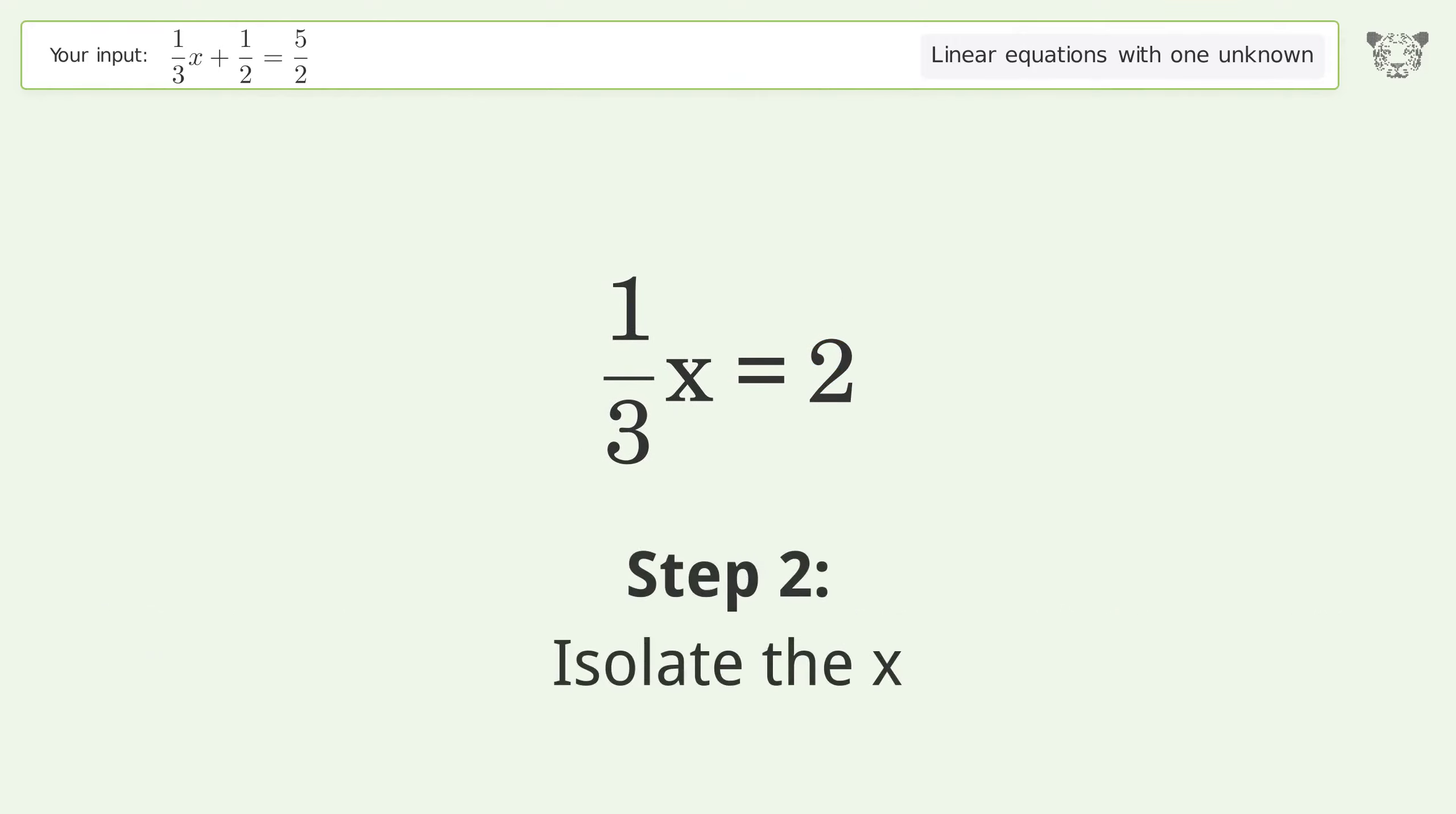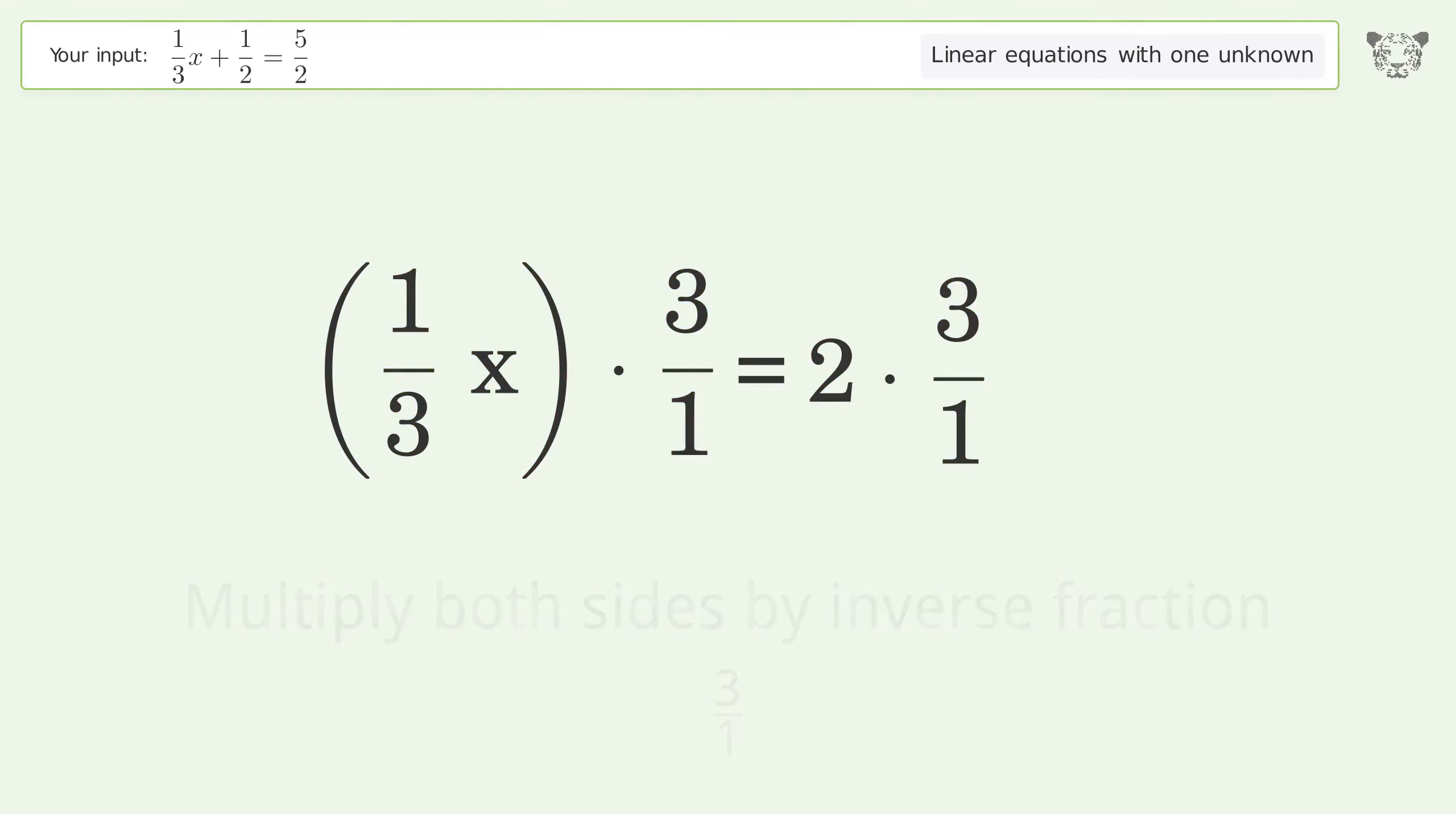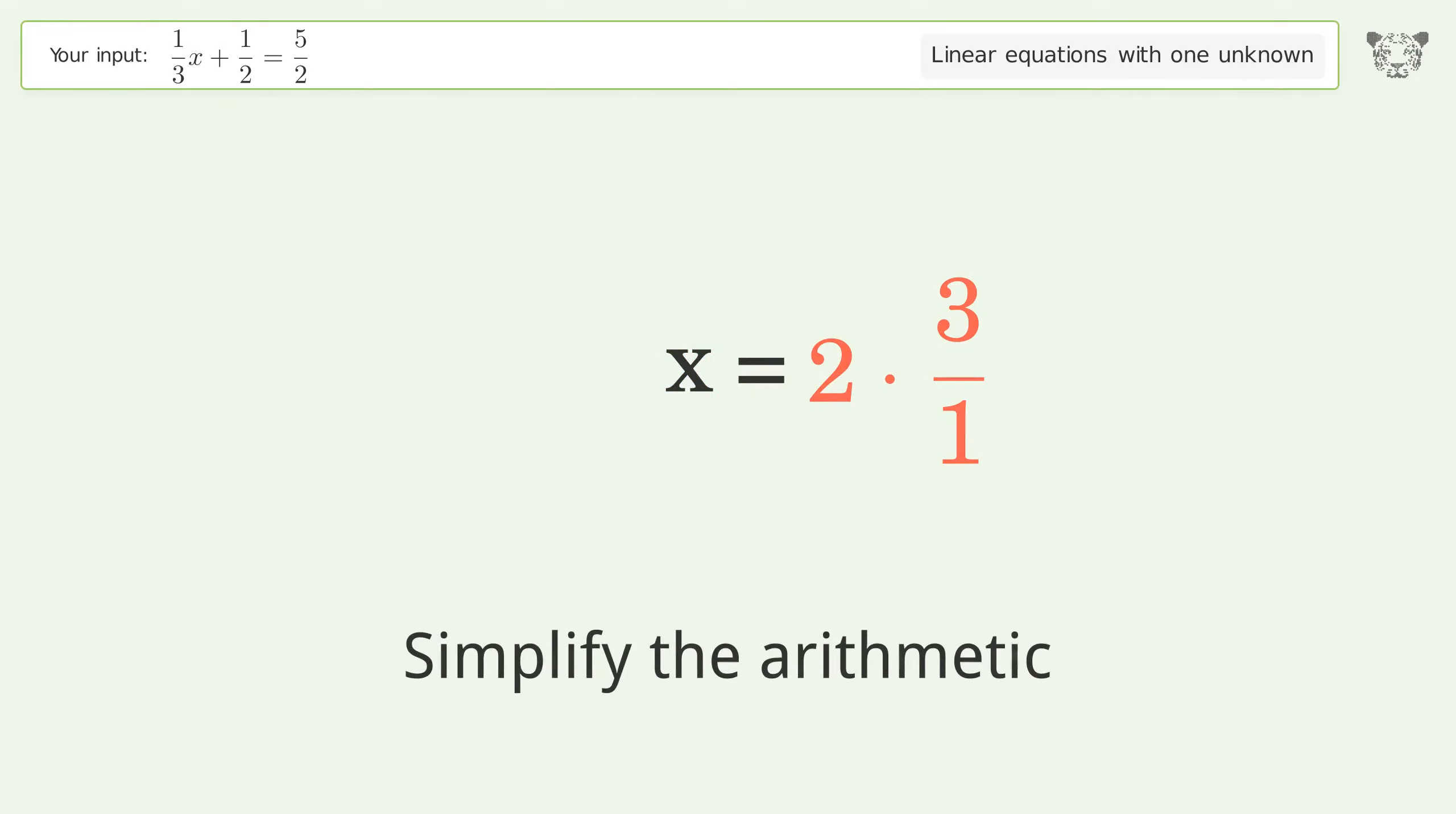Isolate the x. Multiply both sides by inverse fraction 3 over 1. Group like terms. Multiply the coefficients. Simplify the fraction. Simplify the arithmetic.